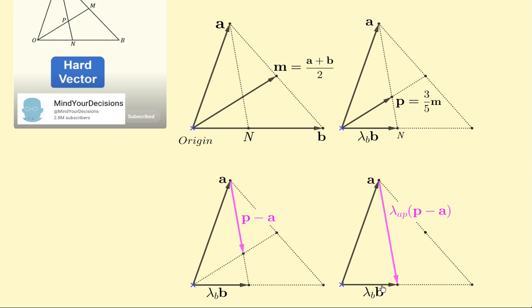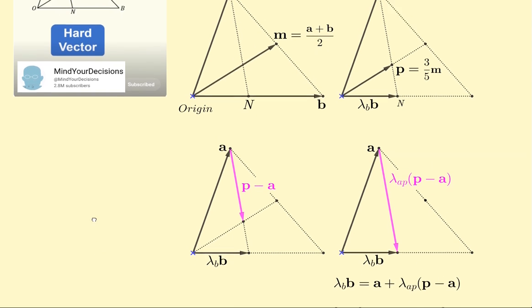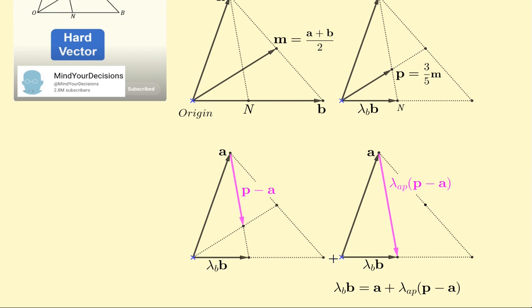So what we'll do is write this side here as a scalar times B, and this vector here is lambda_AP, the scalar times P minus A. So now we can write our nice vector triangle equation: lambda_B times B is also the sum of A and lambda_AP times P minus A.